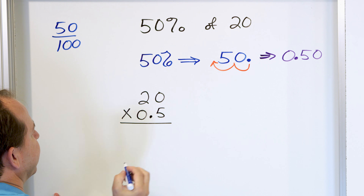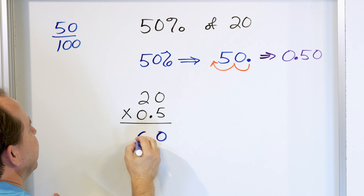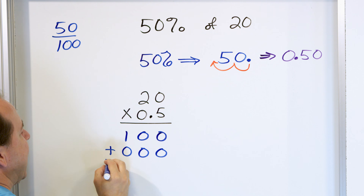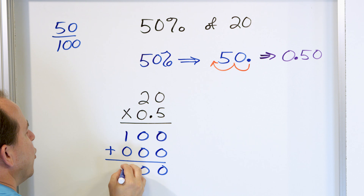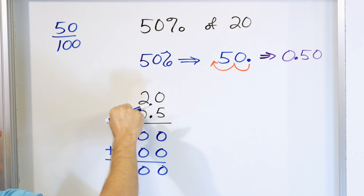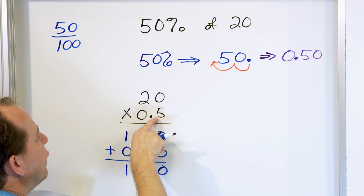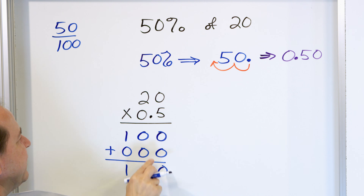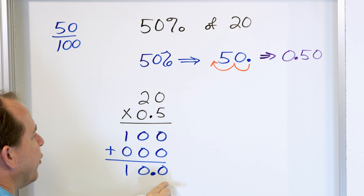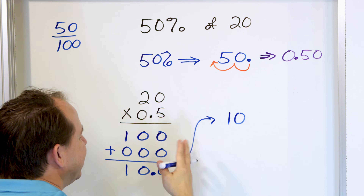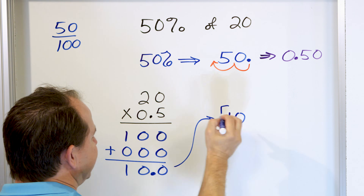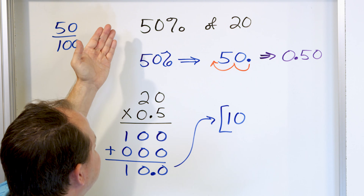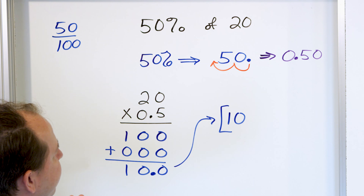Ignore the decimal first. 5 times 0 is 0. 5 times 2 is 10. Drop a 0. 0 times 0 is 0. 0 times 2 is 0, and I add. I'm going to have 0, 0, 1. Now I have to figure out where to put the decimal. In my problem, I only have one digit after the decimal. There are no digits after the decimal in 20. So the answer has one digit after the decimal — 10.0. Another way of saying that is just 10, which is what we already said: 50% means half of whatever, and half of 20 is 10.